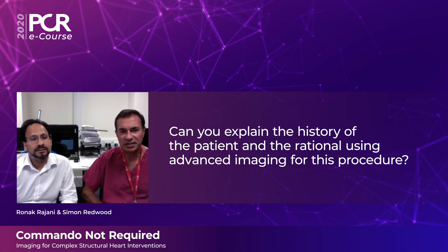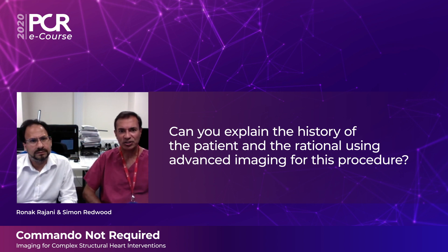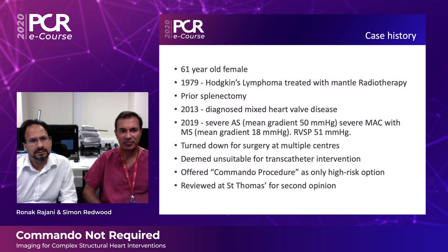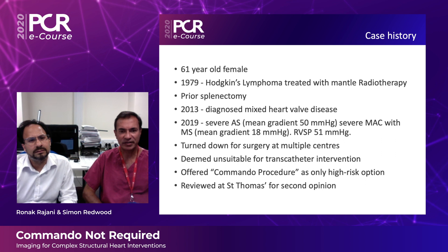The case we're presenting is a 61-year-old lady who had Hodgkin's lymphoma many years ago, treated by mantle radiotherapy and a prior splenectomy. In 2013 she was diagnosed with mixed aortic and mitral valve disease, which progressed, and six years later she presented with severe aortic stenosis, severe mitral annular calcification with mitral stenosis, and an element of pulmonary hypertension.